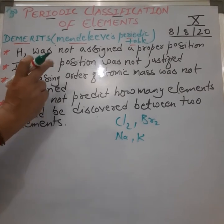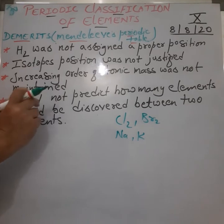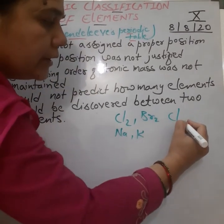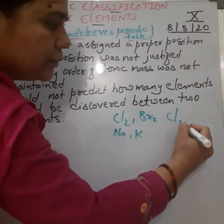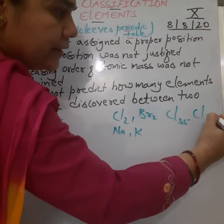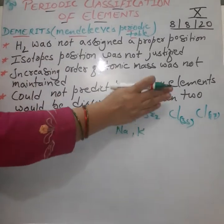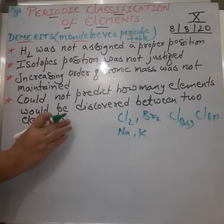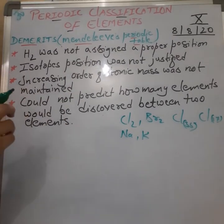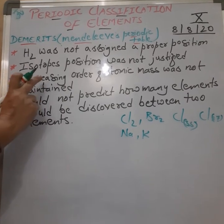The second drawback was that the isotope position was not justified. As per Mendeleev's statement, elements were arranged in increasing order of atomic masses. If we take the example of chlorine, it has two isotopes — Cl-35 and Cl-37 — and both were kept in the same box. That was also one of the drawbacks.